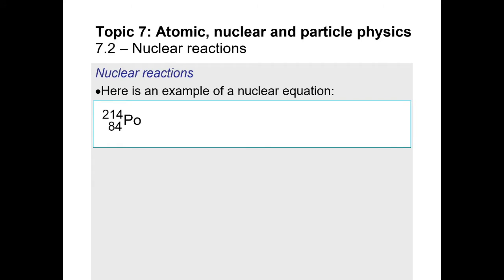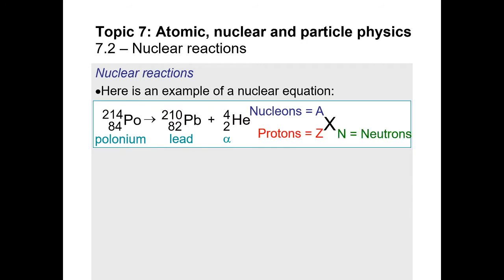Here is an example of a nuclear reaction equation: Polonium-214 becoming Lead-210 plus a Helium-4 nucleus, the alpha particle. In this notation, the top-left number (A) represents the total number of nucleons — protons and/or neutrons. The bottom-left number (Z) represents the number of protons, and the bottom-right (N) represents neutrons, though we don't usually write N and sometimes omit Z as well.